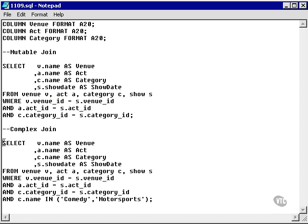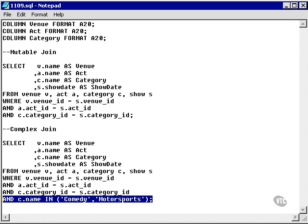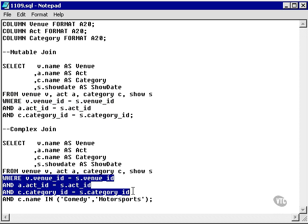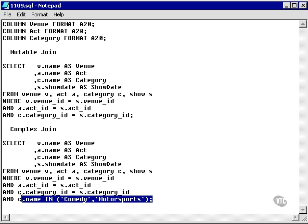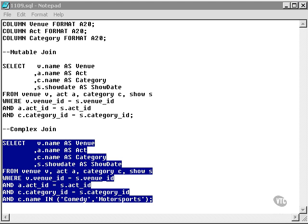A complex join is exactly the same as a mutable join, except that it has some extra filtering added on. So you can see from this query, I have three lines for the join in the where clause, and here I have three lines and an extra line. So I'm specifying that the category must be of a certain category.